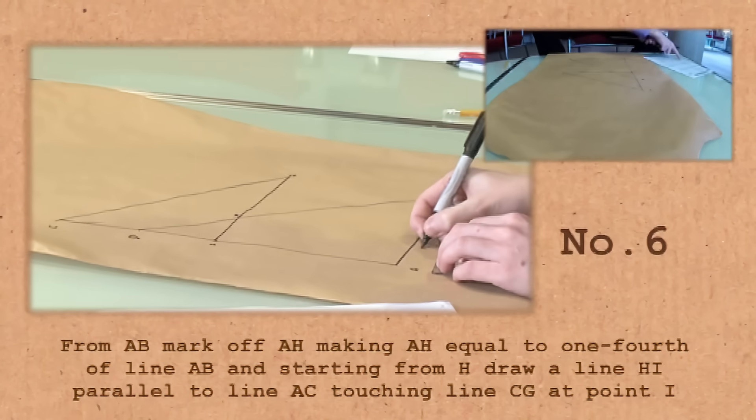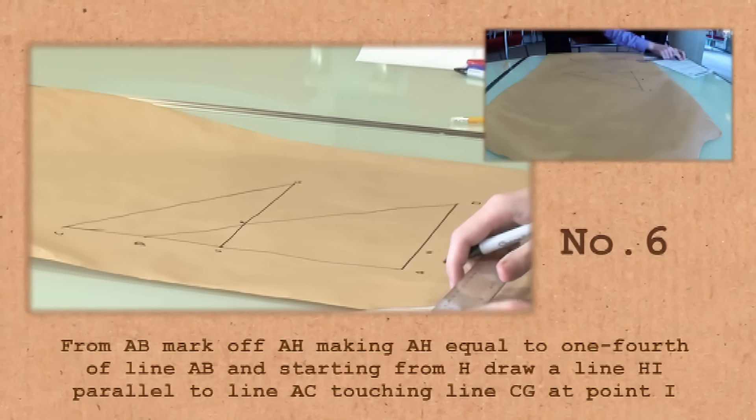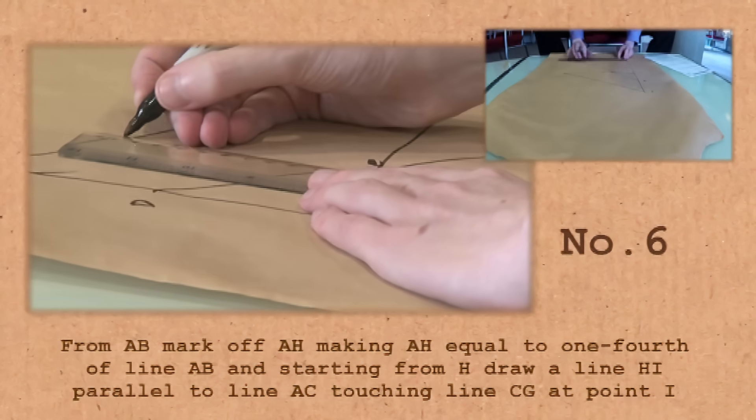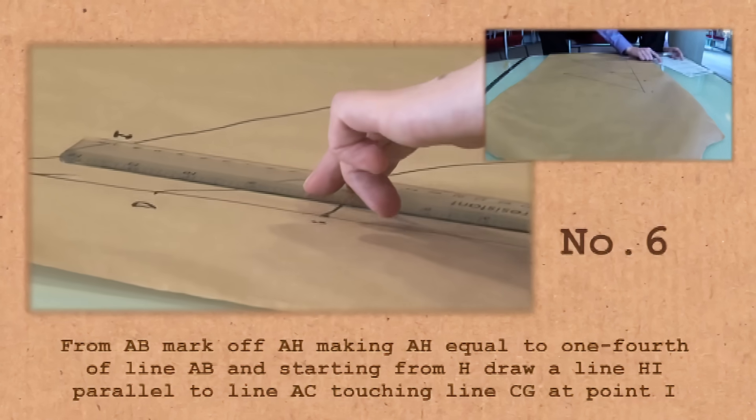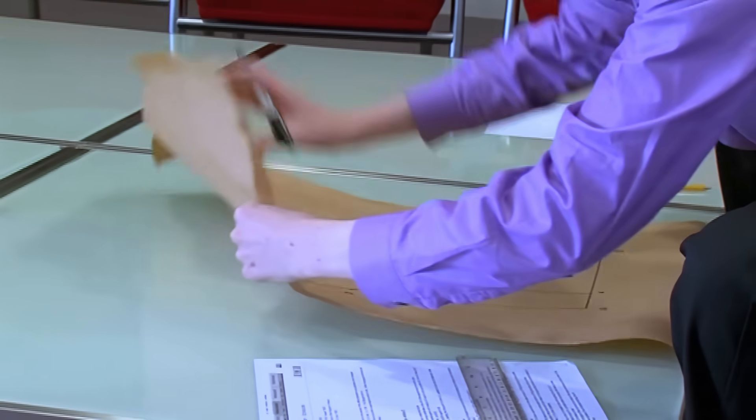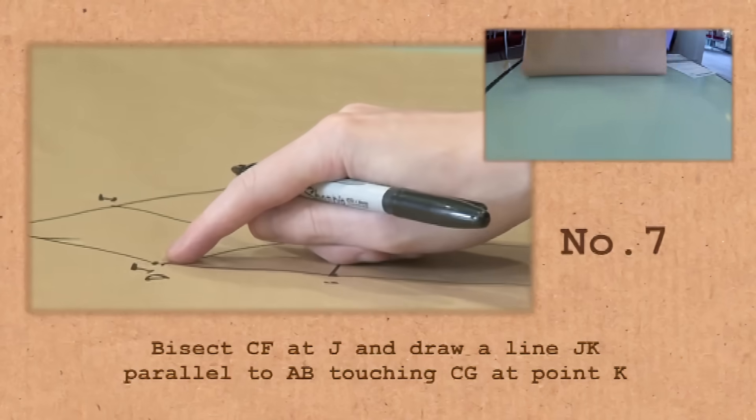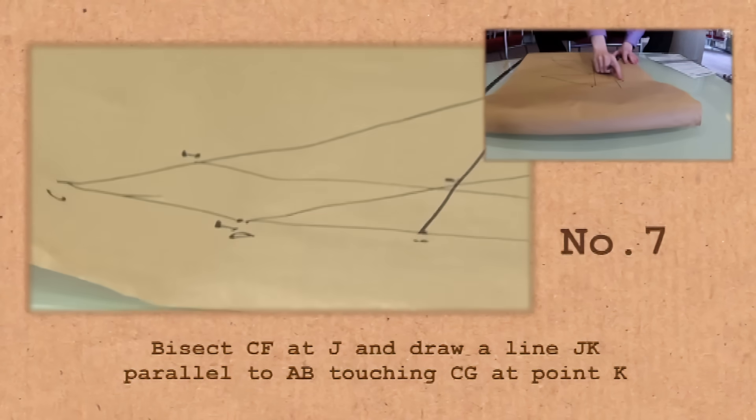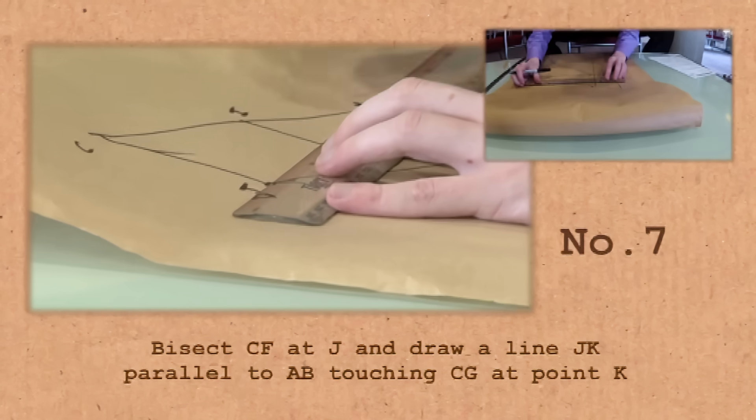From AB, mark off AH, making AH equal to 1 fourth of line AB. And starting from H, draw a line HI parallel to line AC, touching line CG at point I. If it was on cloth, we could just fold it in half and mark it. See? So maybe I'll do that with the paper. So I want to draw half this distance. Bisect CF at J. And draw a line JK parallel to AB touching CG at point K. It is not necessary to have to measure with your ruler. You can follow these instructions without any measuring at all.